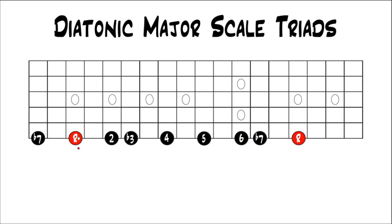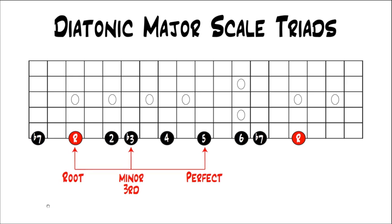So why did we do that? Now we can build a triad off of this second note of the major scale and see what it ends up being. If we stack thirds, we end up with the root, minor third, perfect fifth — and as you know, that's a minor triad. So building a triad off of the second note of a major scale gives you a minor triad. Building off the first note of the major scale gives you a major triad, like we saw when we first started.